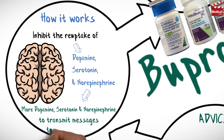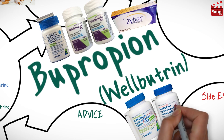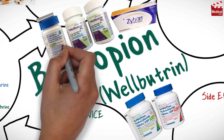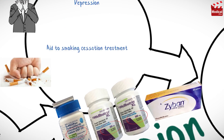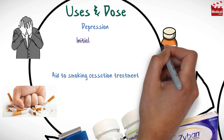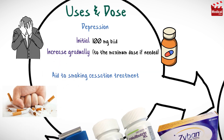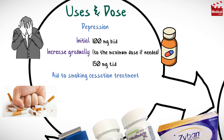Bupropion is available as 75 and 100 milligram tablets, and also as 100, 150, and 300 milligram sustained-release tablets. The usual initial dose for depression in adults is 100 milligrams twice a day, increased gradually to the maximum dose if needed.